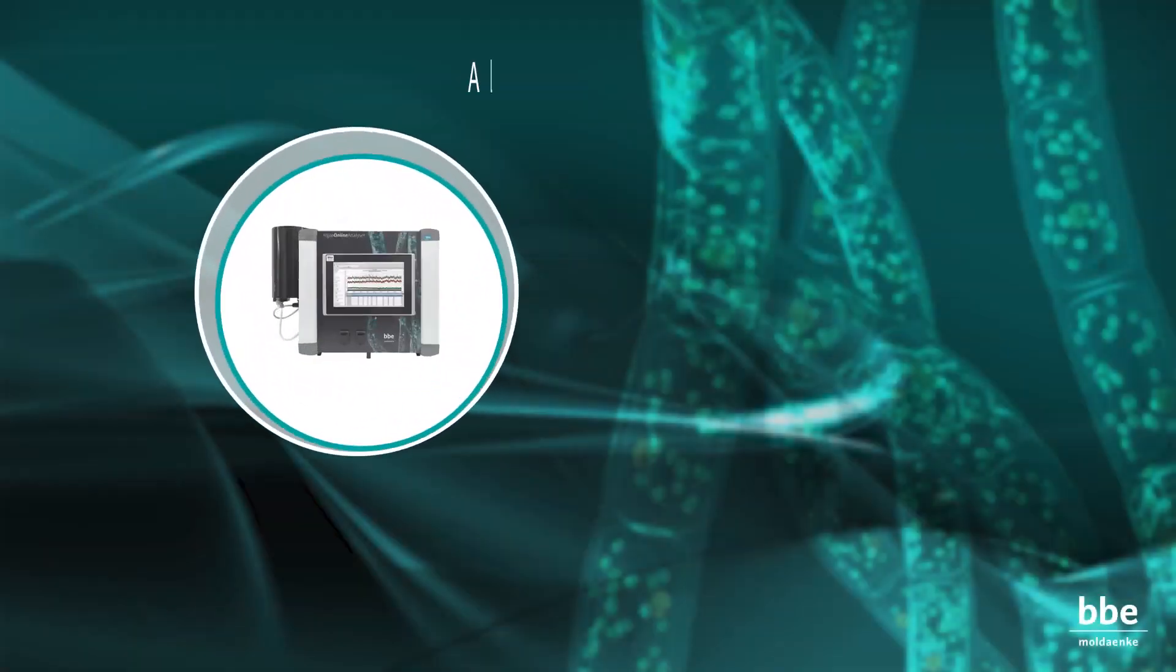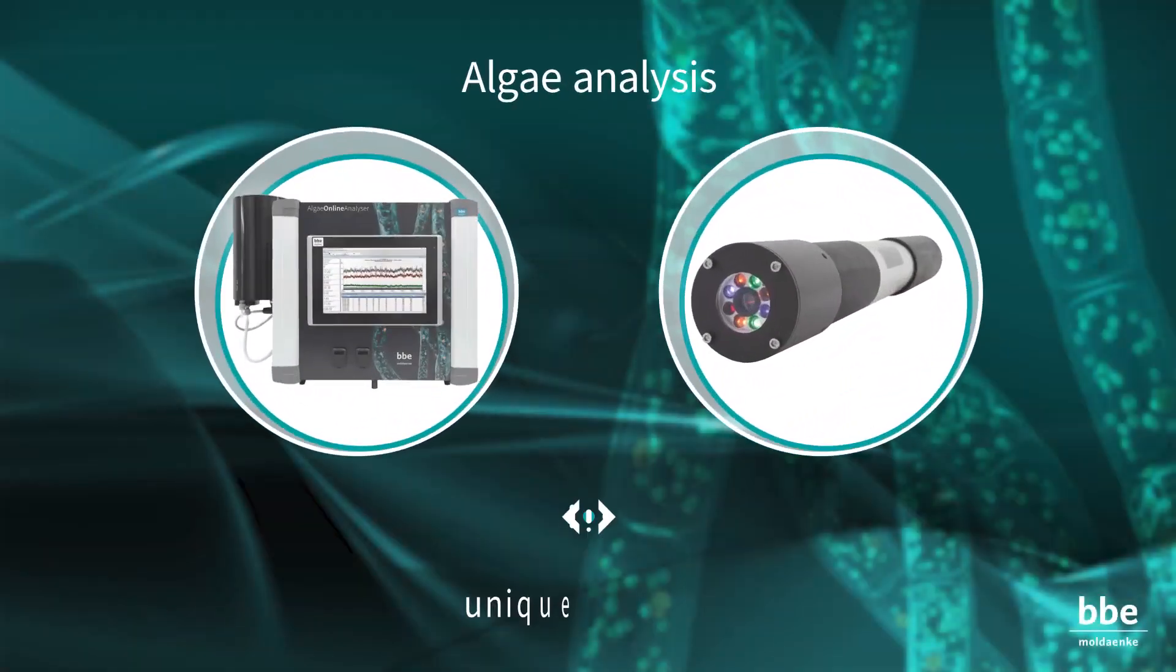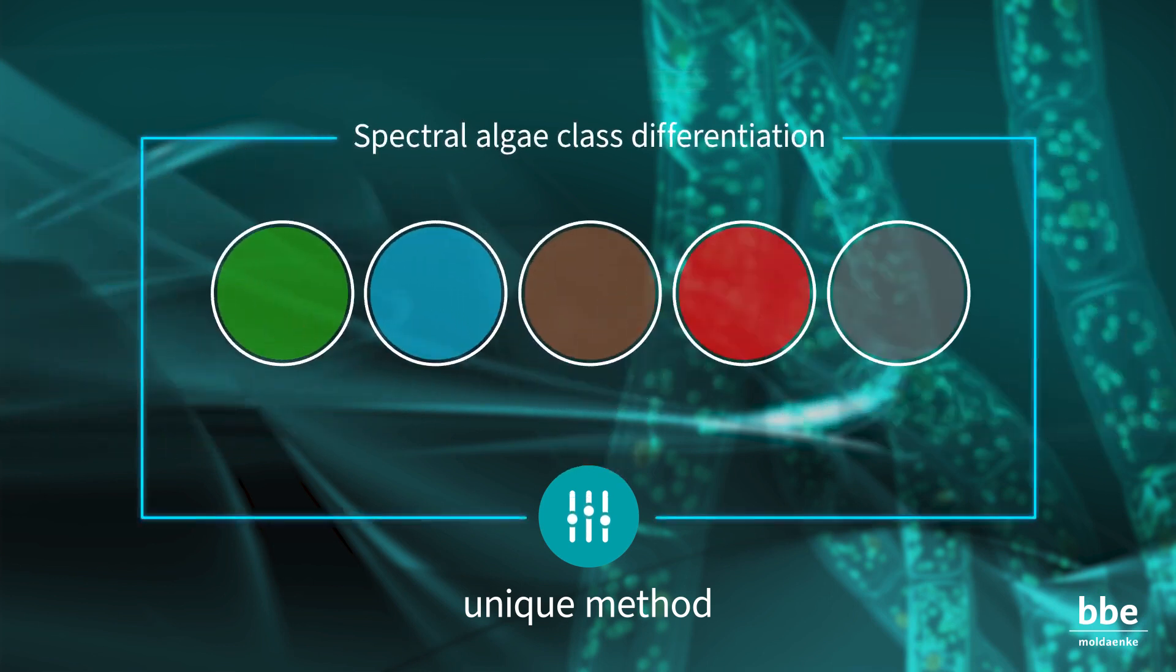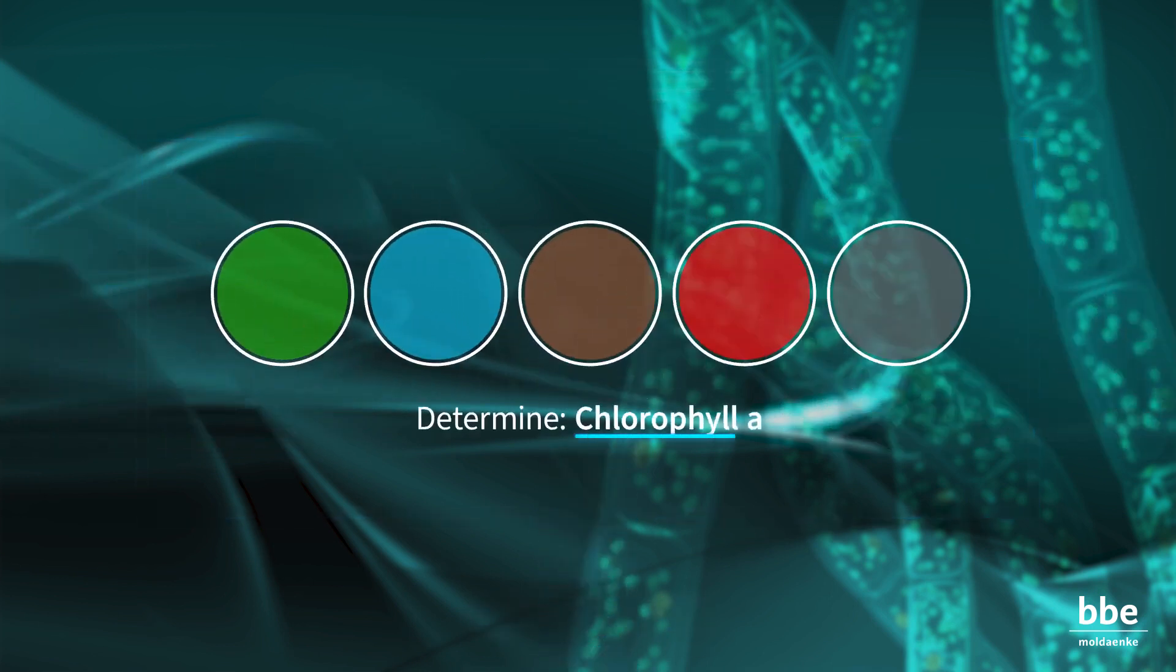The BBE devices for algae analysis use a unique method of spectral algae class differentiation to determine the content of chlorophyll A as a proxy for the biomass.